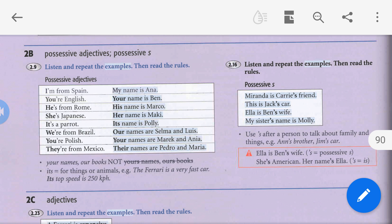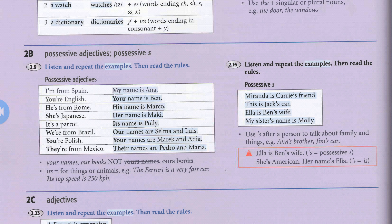Use 's after a person to talk about family and things — for example, Anna's brother, Jim's car. Notice that we don't confuse the verb 'to be' with the possessive S. For example: Ella is Ben's wife — that apostrophe S is possessive S. But: She's American — that apostrophe S is the verb 'to be', meaning 'is'.